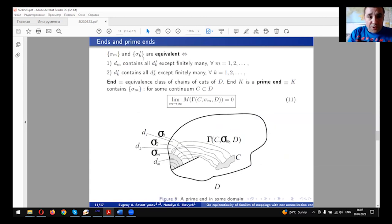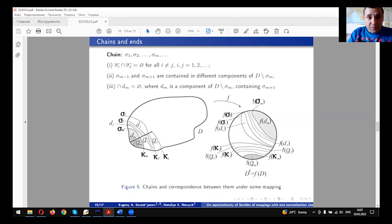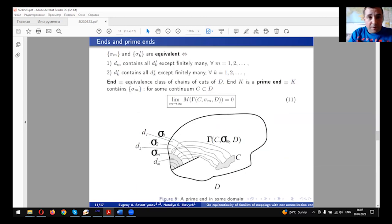Two chains are called equivalent if the corresponding domains in this picture, for example, domains D_m or domains G_m, contain each other for sufficiently big indices m and k.